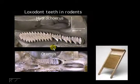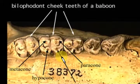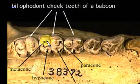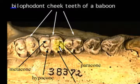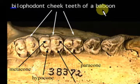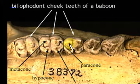Bilophodont means two lophs: the metacone and hypocone are connected by one loph, and the paracone and protocone are connected by another. An example is the baboon — not all primates have bunodont dentition; some can have lophodont dentition like this.